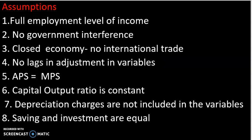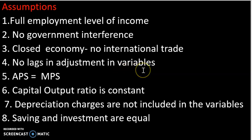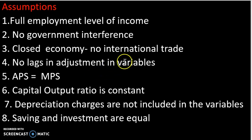The assumptions of the Harrod-Domar model are: first, full employment level of income; second, no government interference; third, closed economy with no international trade; fourth, no lags in adjustment variables. If there is an adjustment variable or fluctuation, there is no lag. The variables are savings, investment, and income.